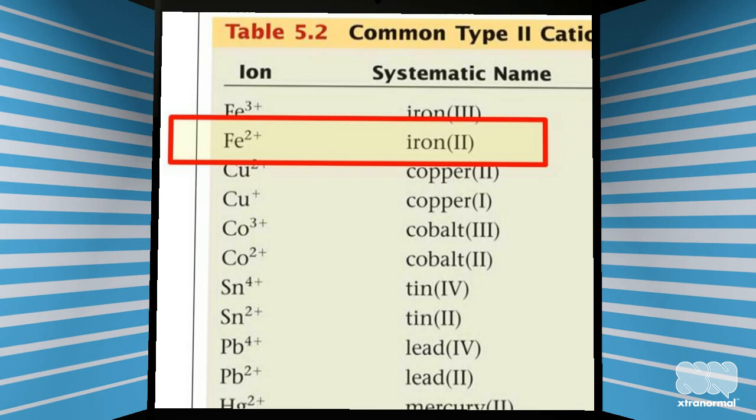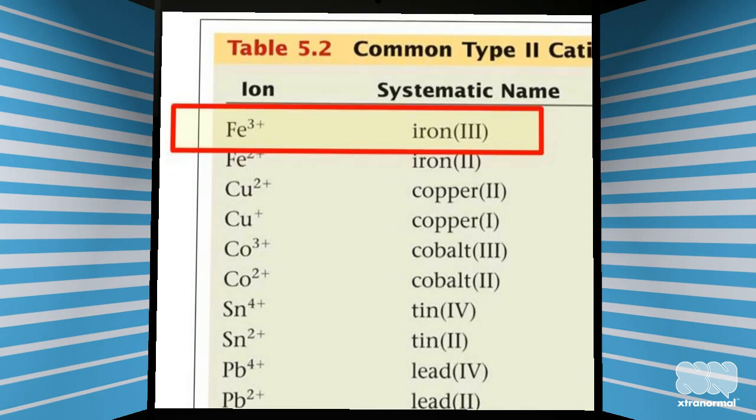And for the anion, you just simply use the anion name, just as I explained earlier. An example is iron 2 chloride. And if you have iron with three positive charges, then you use iron 3 and add the anion name, like iron 3 chloride.